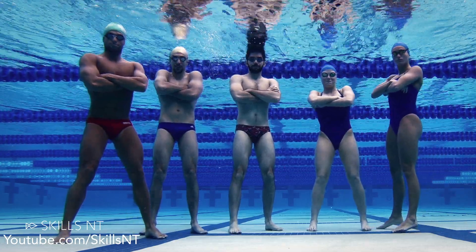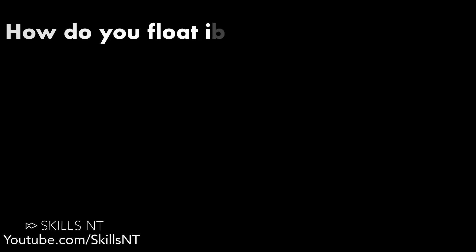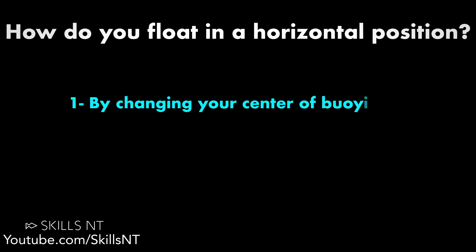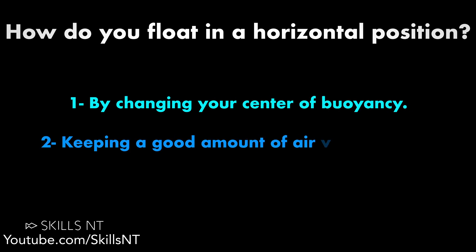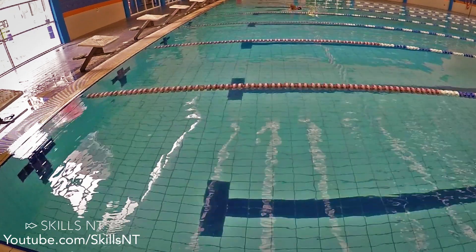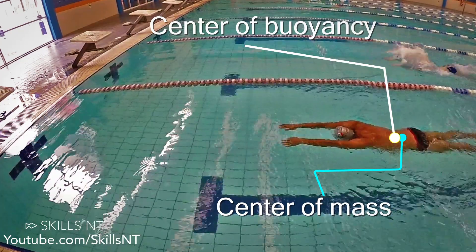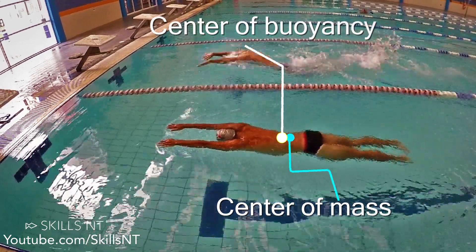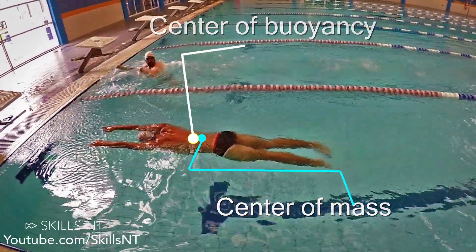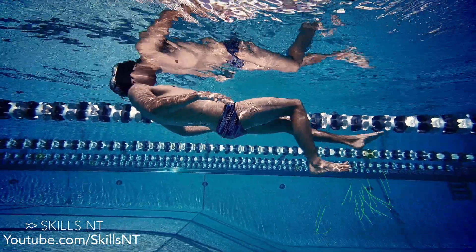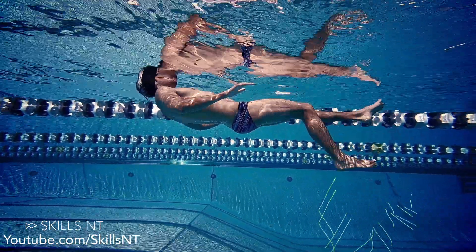For optimal swimming you need a horizontal position. How do you float in a horizontal position? By changing your center of buoyancy, keeping a good amount of air in your lungs, and by kicking. If you have your arms up, the center of buoyancy gets closer to your belly button. And by kicking, you create an upward force that makes the water push you up.